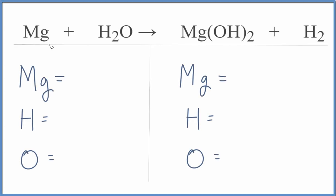Let's add up the atoms. So we have just one magnesium atom, two hydrogens, and then one oxygen.